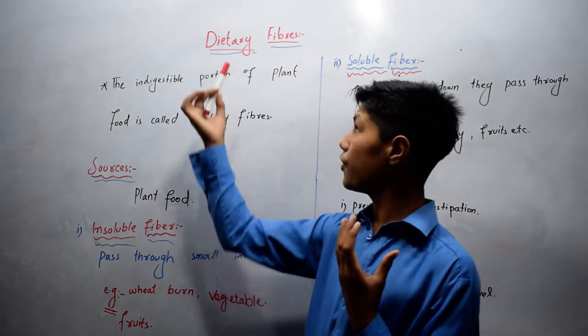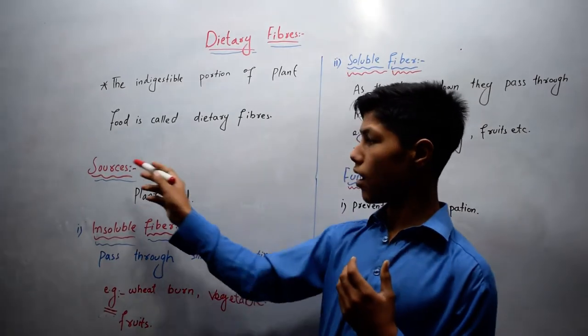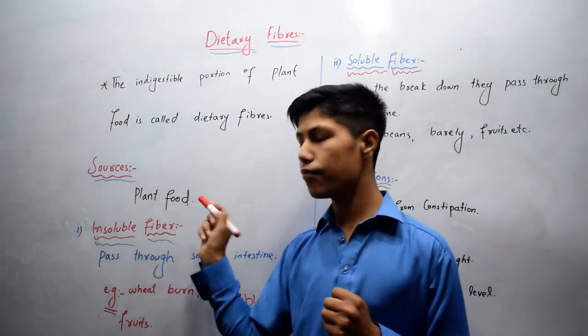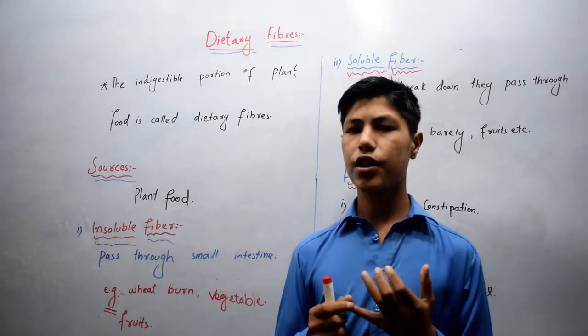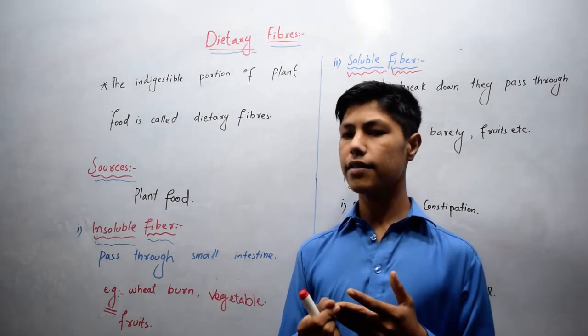Now come to the sources of dietary fiber. The sources of dietary fiber is plant food, which contains vegetables, fruits, beans, etc.